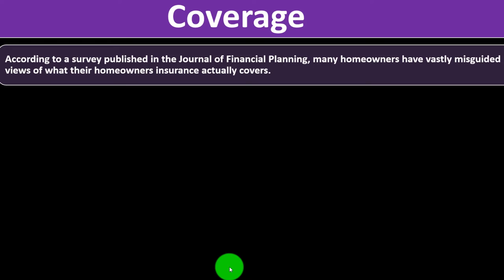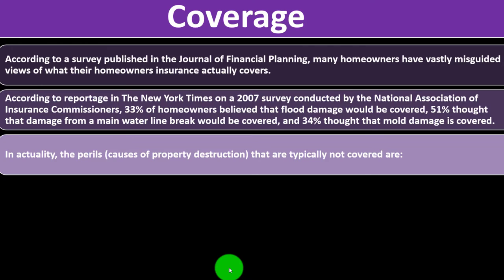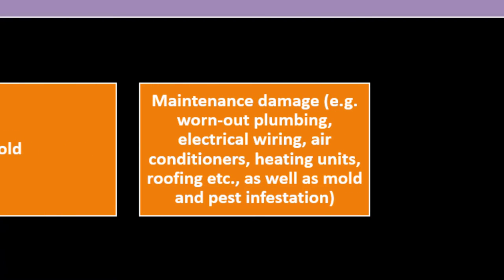Coverage: According to a survey published in the Journal of Financial Planning, many homeowners have vastly misguided views of what their homeowners insurance actually covers. According to reporting in The New York Times on a 2007 survey by the National Association of Insurance Commissioners, 33% of homeowners believed flood damage would be covered, 51% thought damage from a main water line break would be covered, and 34% thought mold damage is covered. In actuality, perils typically NOT covered include flood damage — which is a separate policy — earthquake, which is often a separate policy, mold, maintenance damage, worn-out plumbing, electrical wiring, air conditioners, heating units, roofing, and pest infestation.